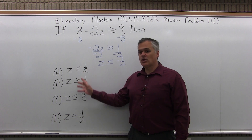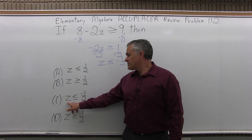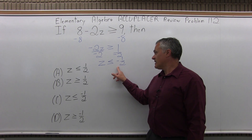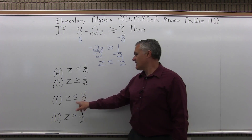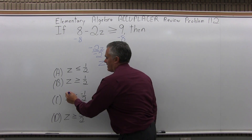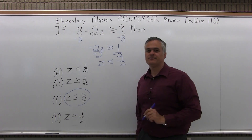The answers all look very similar, but if you pay attention, option C is an exact match for the answer we have: z is less than or equal to negative one half. So the answer is option C.